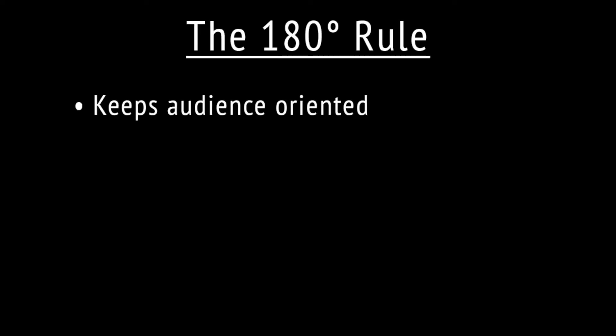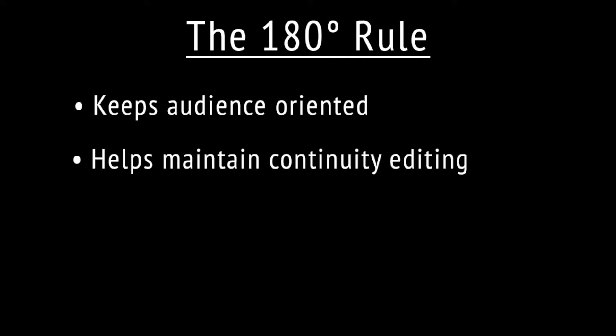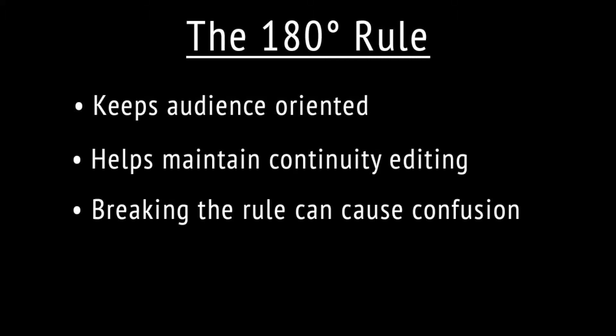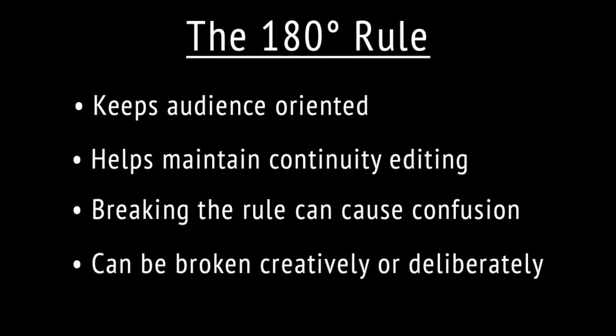Before I end the video, let's do a quick recap. The 180-degree rule is used to keep the viewer aware of the placement of characters and objects in the environment. The rule is also used for continuity editing. Breaking the rule can cause disorientation and is typically advised against. The rule can be broken through character and camera movement, element introduction, or through purposeful line jumping. It's important to observe the rule, but it's also important to know when and how to break it.